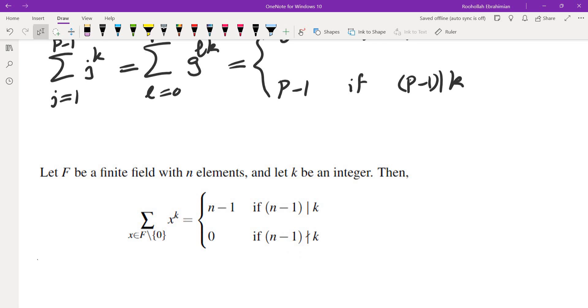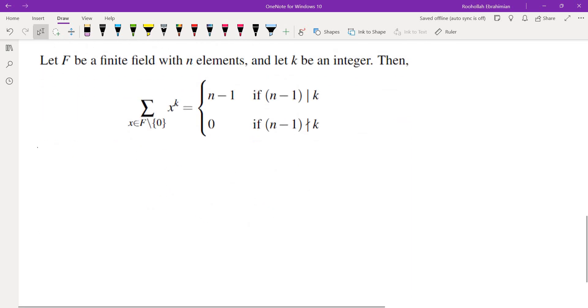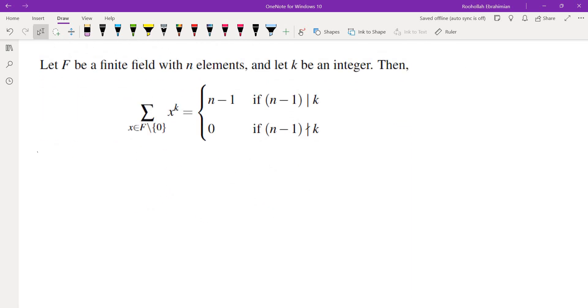Now an extension of this equality is in a finite field. So try this one out. Let F be a finite field with n elements, and let k be an integer. Then the sum of x^k when x ranges over all elements of F except 0 is n-1 or 0, depending on whether (n-1) divides k or (n-1) does not divide k.